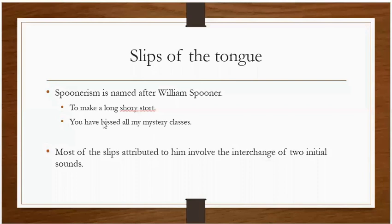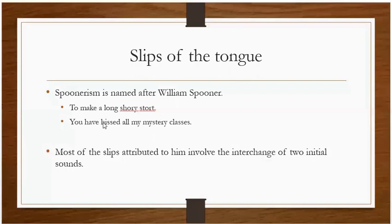These are examples of slip of the tongue, or spoonerism, where two sounds are actually interchanged. In the tip-of-the-tongue phenomenon, sounds were not interchanged — rather, when retrieving a word, we retrieved a wrong word that was close to the actual word. Here, we have picked the right words but while articulating, we interchanged some of their sounds.